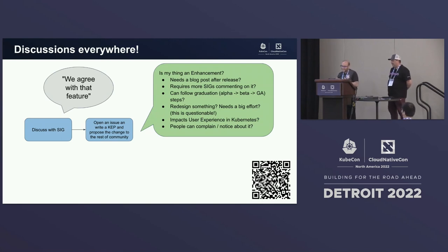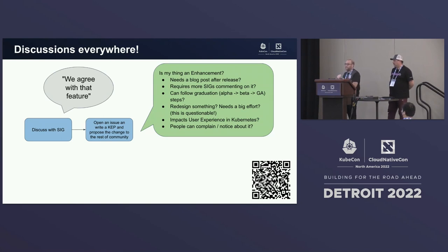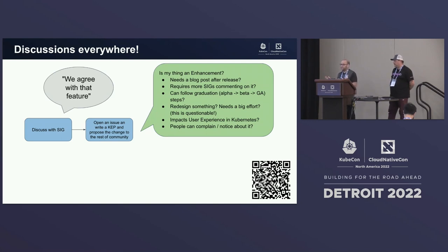There are some things you need to understand when you want to bring that to the community: is this thing an enhancement? Does it need a blog post? Does it require more SIGs — is this just something for network or network security and maybe the API? Does it redesign something, need a big effort, impact user experience, and so on? Mostly, if someone can complain or notice about it, it's probably a KEP — not like a bug fix or something like that.